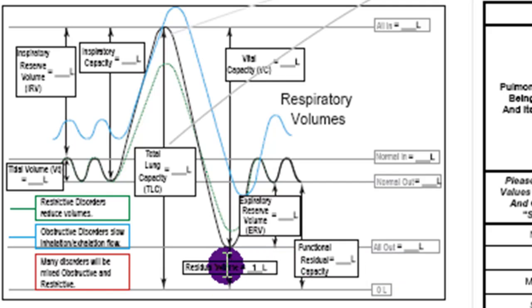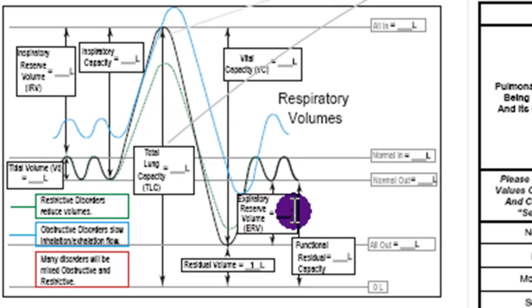It can be actually calculated by having somebody breathe in a helium concentration and watch the dilution of that helium, or generally it's just estimated to be around one liter. One of the things you can also note, I mentioned that inspiratory capacity and expiratory reserve are going to be affected in different restrictive disorders. I've kind of drawn some lines on here. The blue line represents an obstructive disorder, and the green line represents a restrictive disorder.